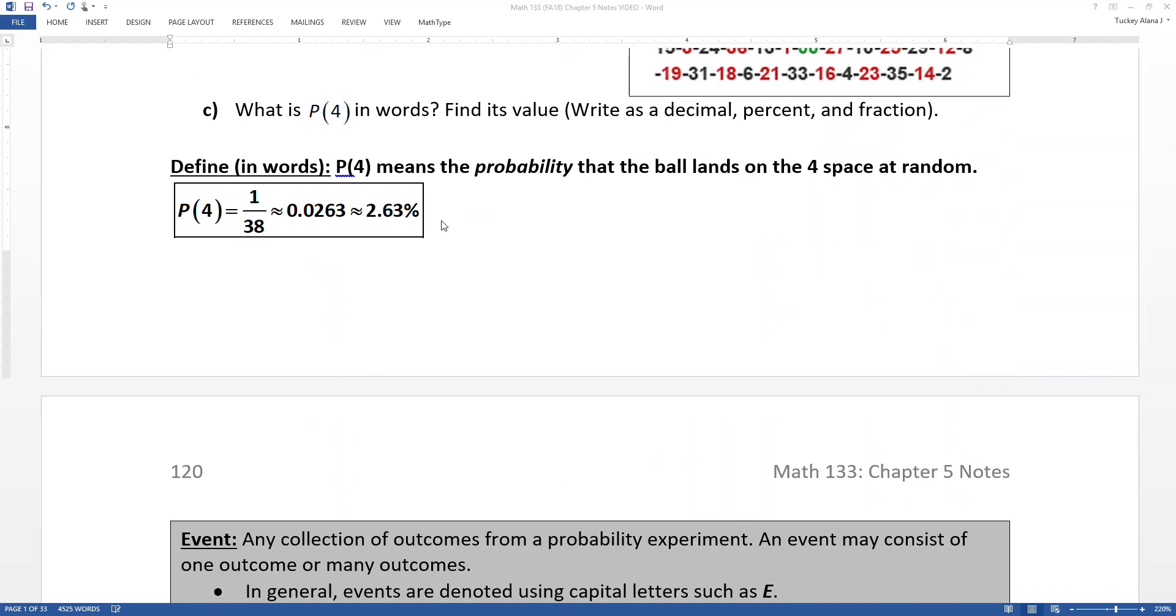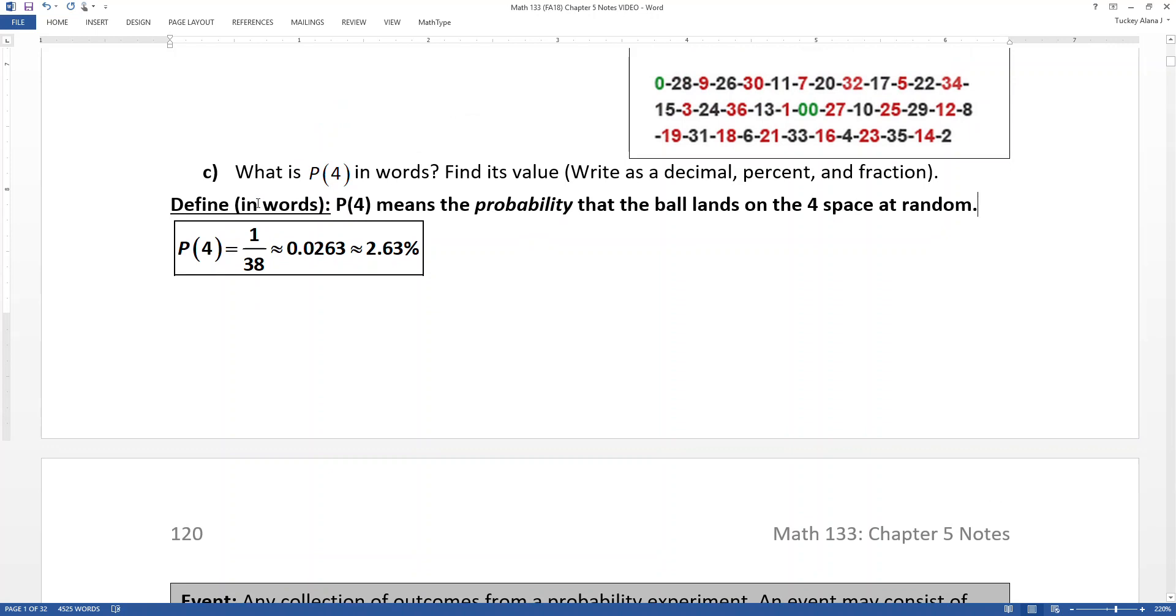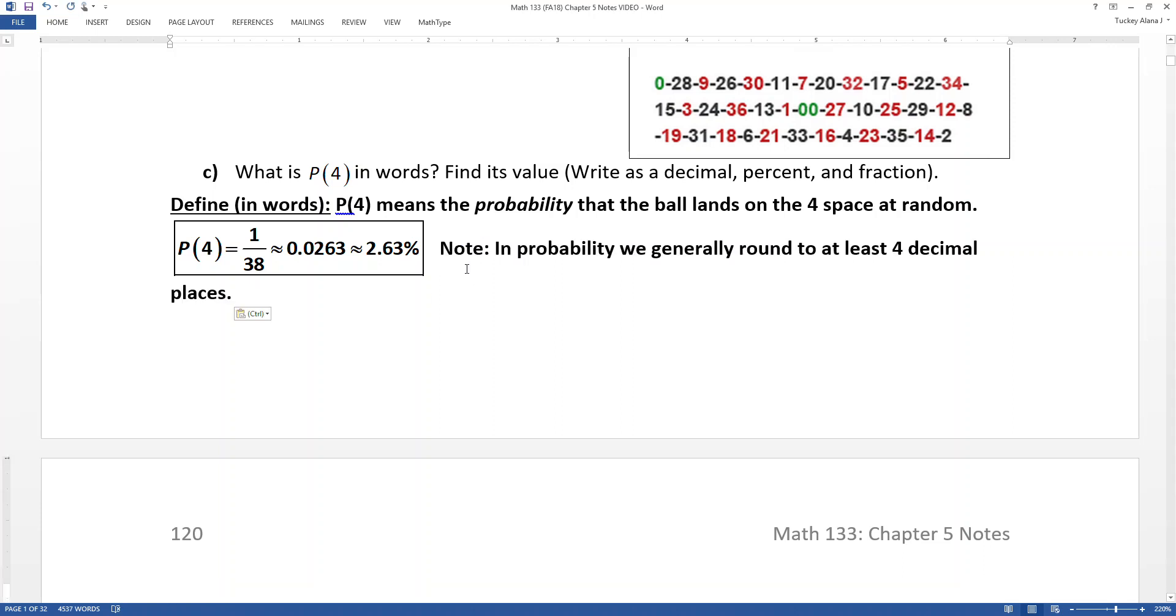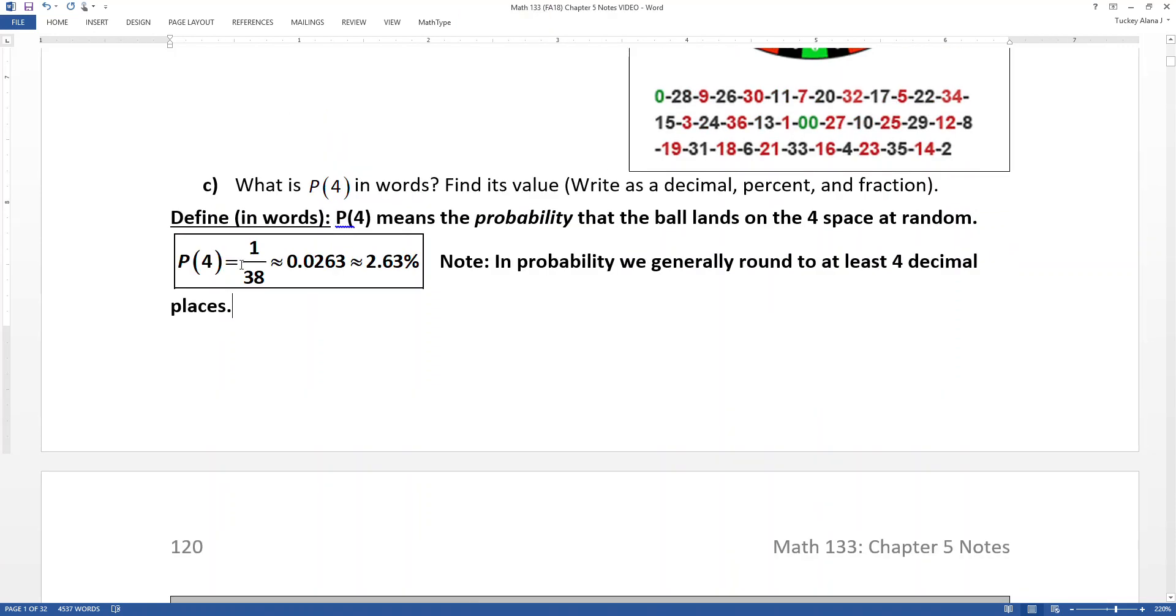Just a little note. In general, we round probability. If we're going to use decimals, we usually use four decimal places for decimals. If we're doing fractions, obviously we just leave the fraction. Sometimes you reduce it, sometimes not. And then percentages, it depends on the context, but sometimes two decimal places, sometimes three, and so on. So I did four decimal places in there.